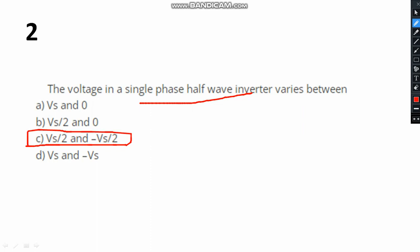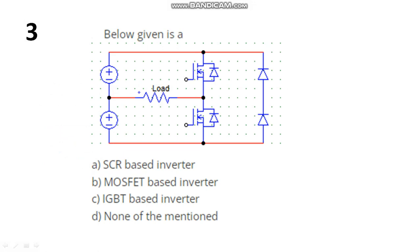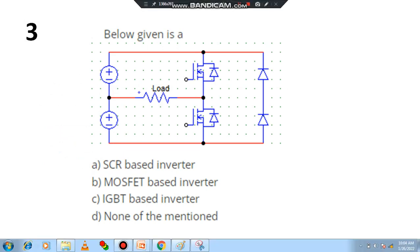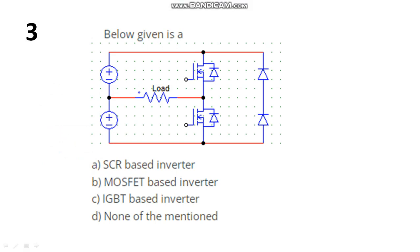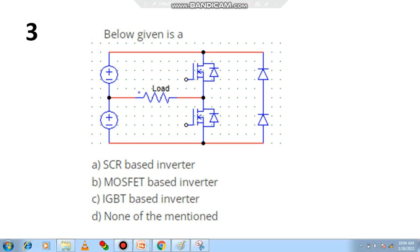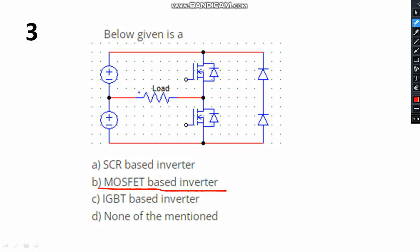Identify the device in the circuit. The switches are MOSFET, and there is a diode also. So we can say it is a MOSFET-based inverter. Option B is the right answer.